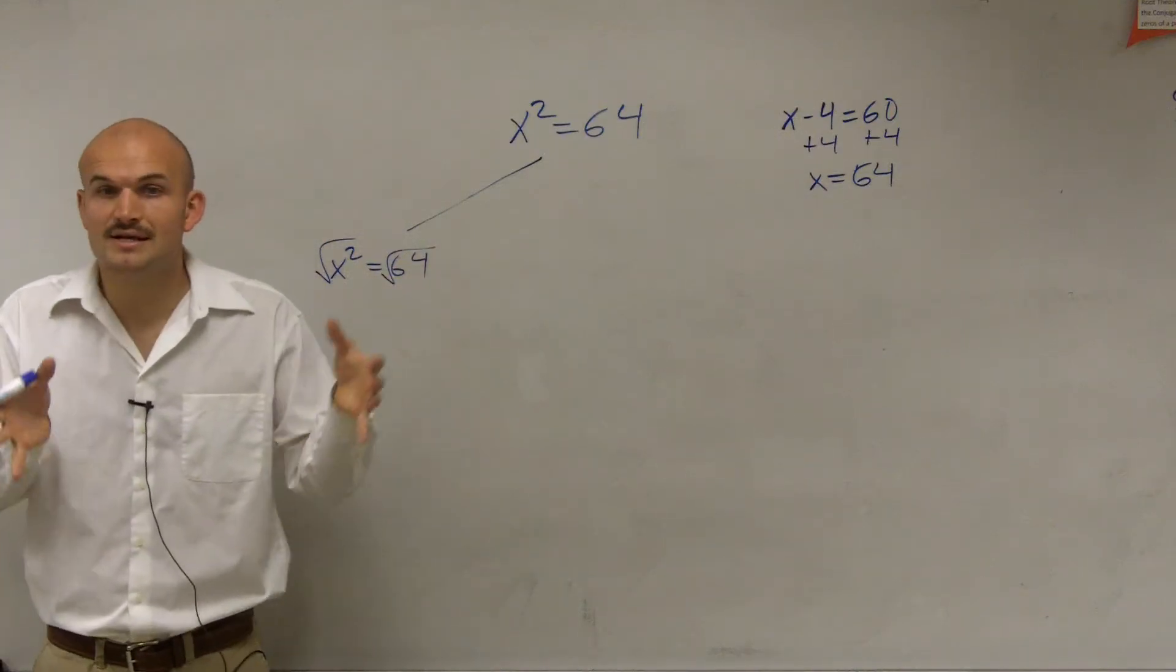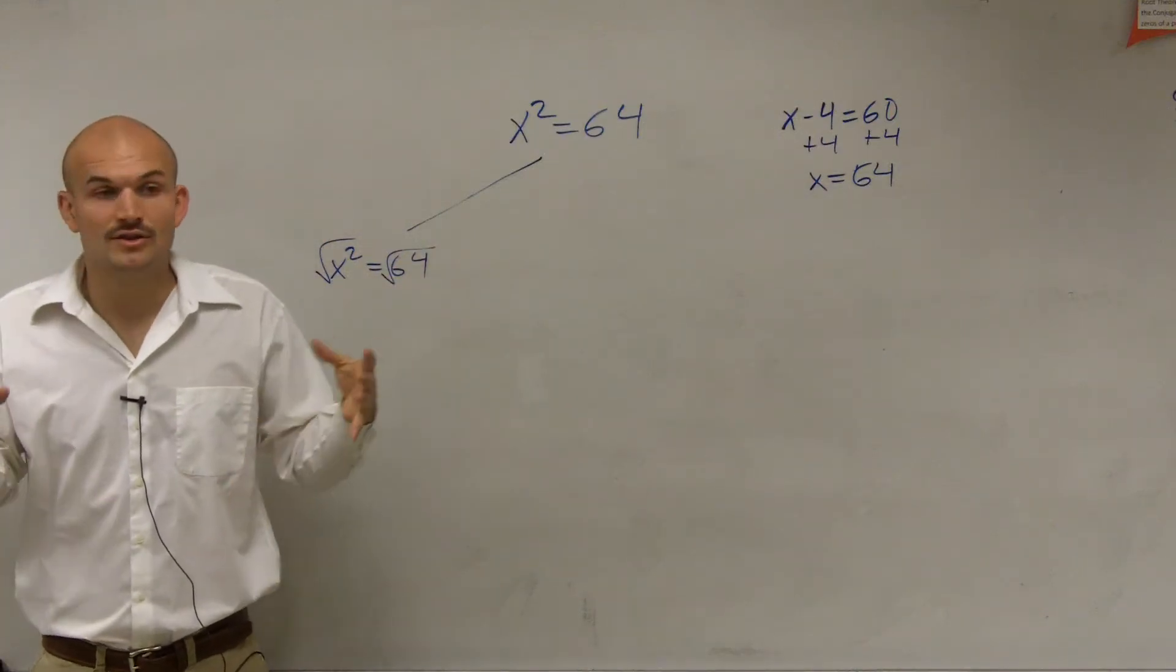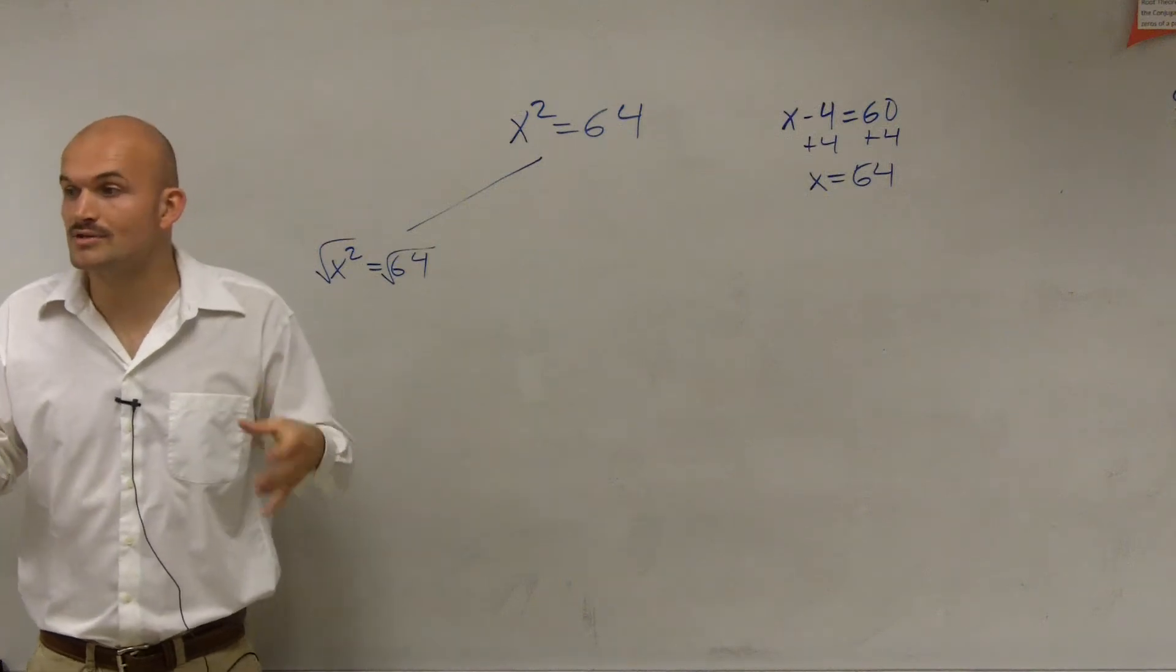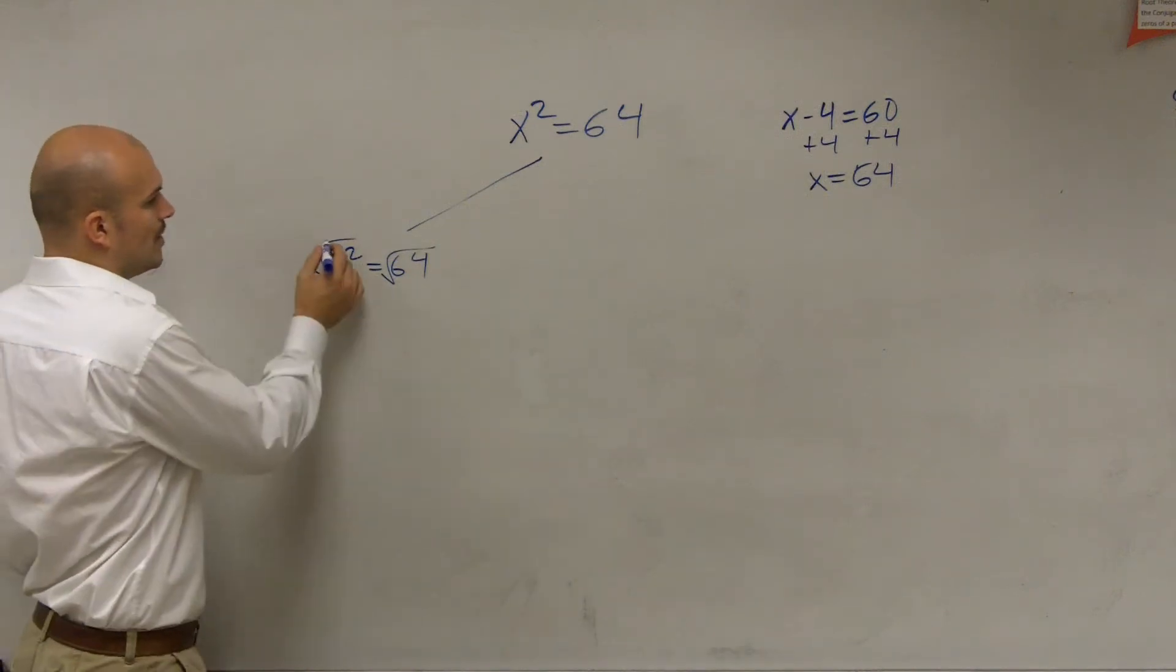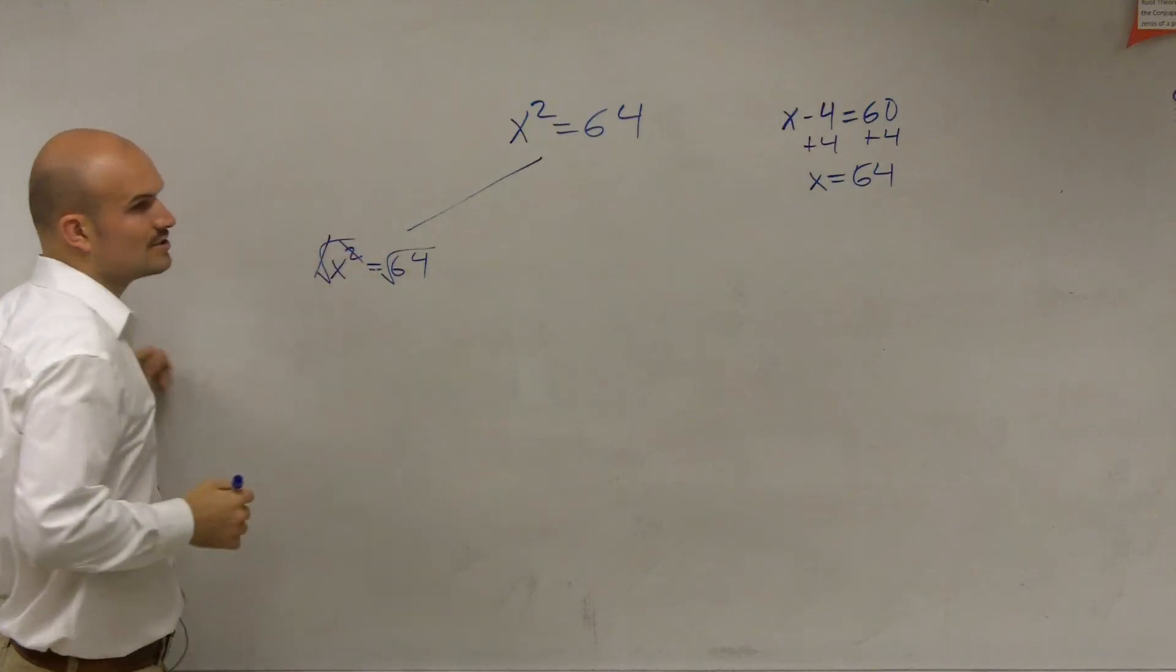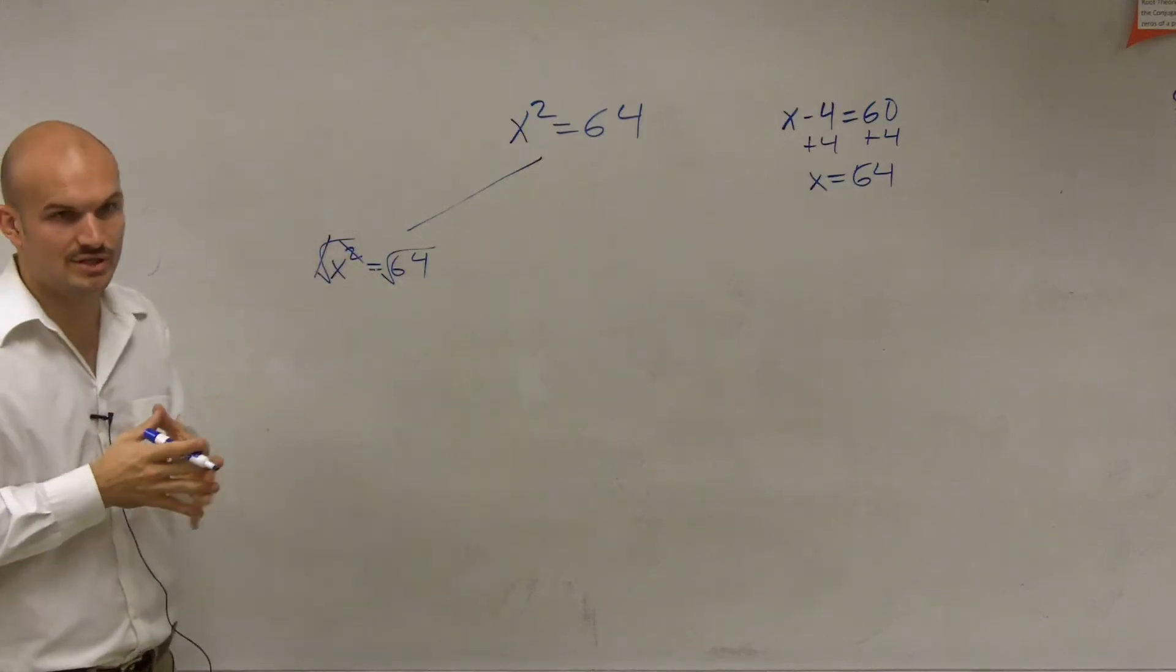So squaring says, take a number and multiply it by itself. The square root says, what two numbers multiply by ourselves are going to give us the answer. But what we like to say is they are going to undo each other.